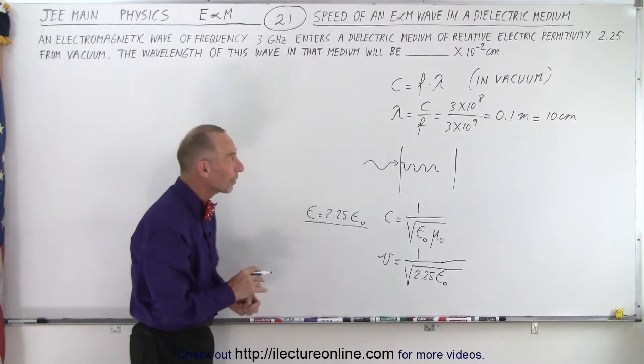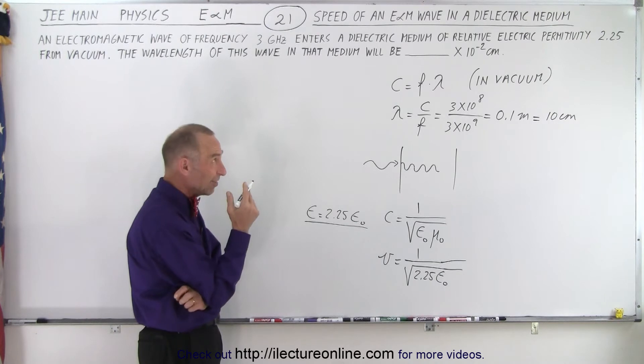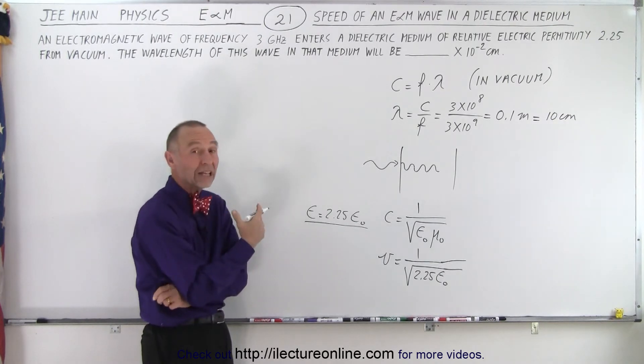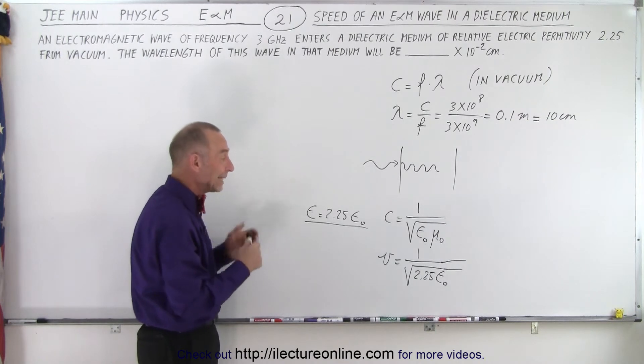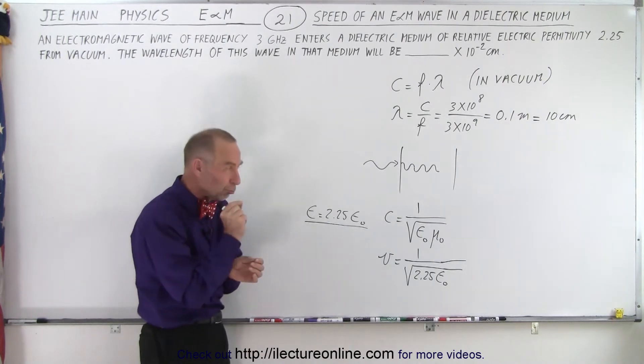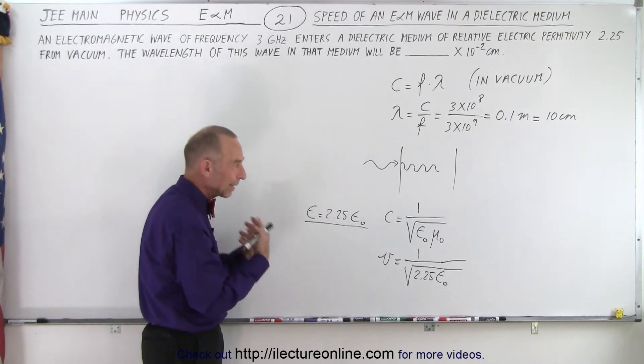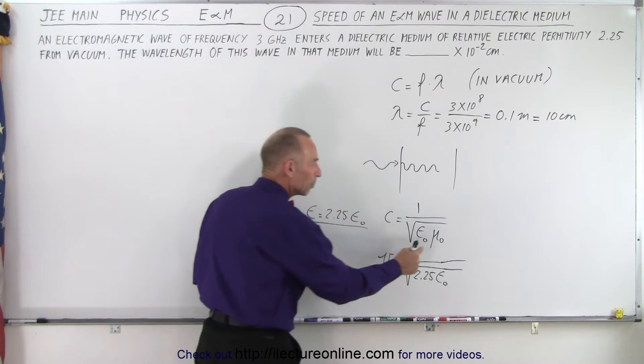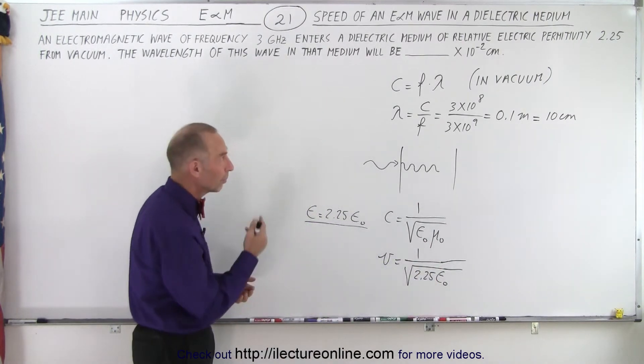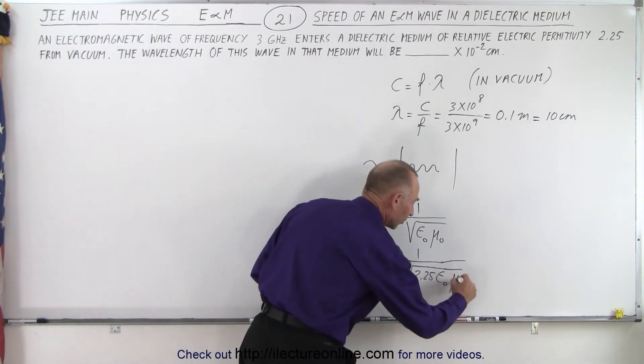Now since they didn't mention anything about the μ₀ maybe it doesn't change and it turns out the magnetic permeability doesn't really change much, just a small amount once the wave enters into a medium. So the dielectric medium does not affect the magnetic permeability. It does affect the electric permittivity and so therefore we can simply say that it's approximately equal to this.